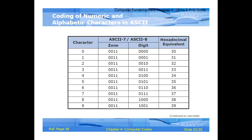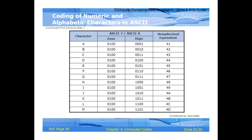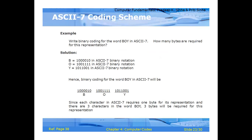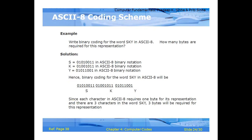ASCII-7 uses a 7-bit coding scheme to store characters. ASCII-8 uses an 8-bit coding scheme to store characters. Characters from A to Z and numeric characters are represented in both schemes.